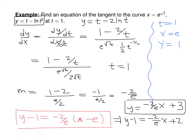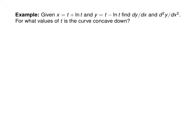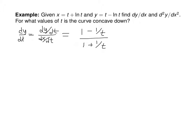Unless explicitly asked to get something into slope-intercept form, you can leave it at the point-slope step. To find the second derivative, which tells us about concavity, we first need the first derivative. dy/dx = (dy/dt)/(dx/dt) = (1 − 1/t)/(1 + 1/t), which simplifies to (t − 1)/(t + 1) by multiplying numerator and denominator by t.